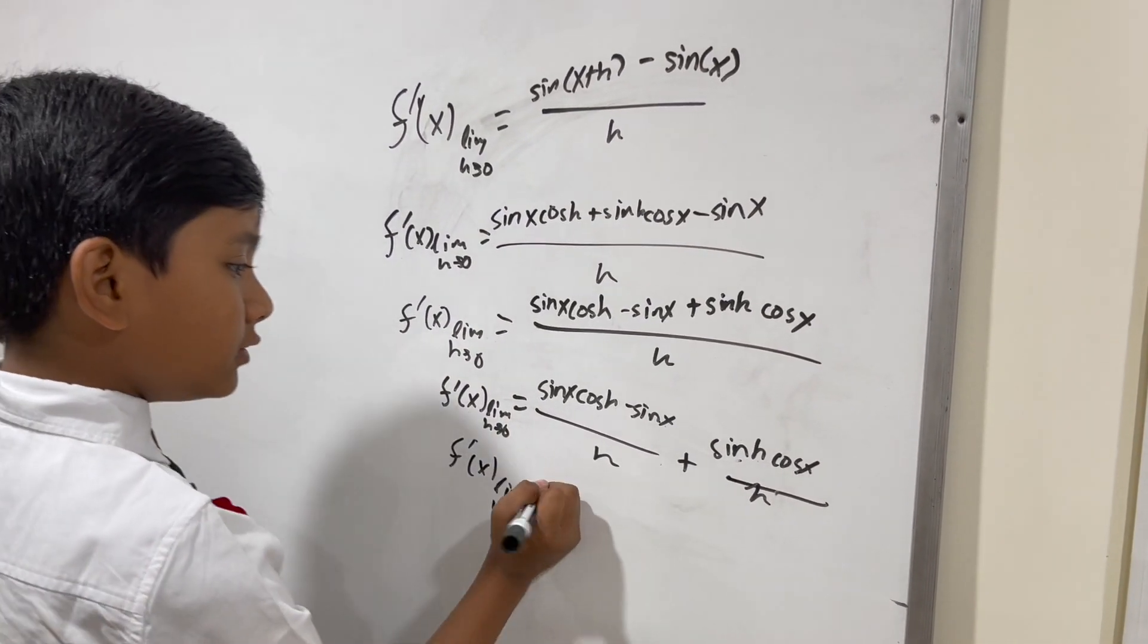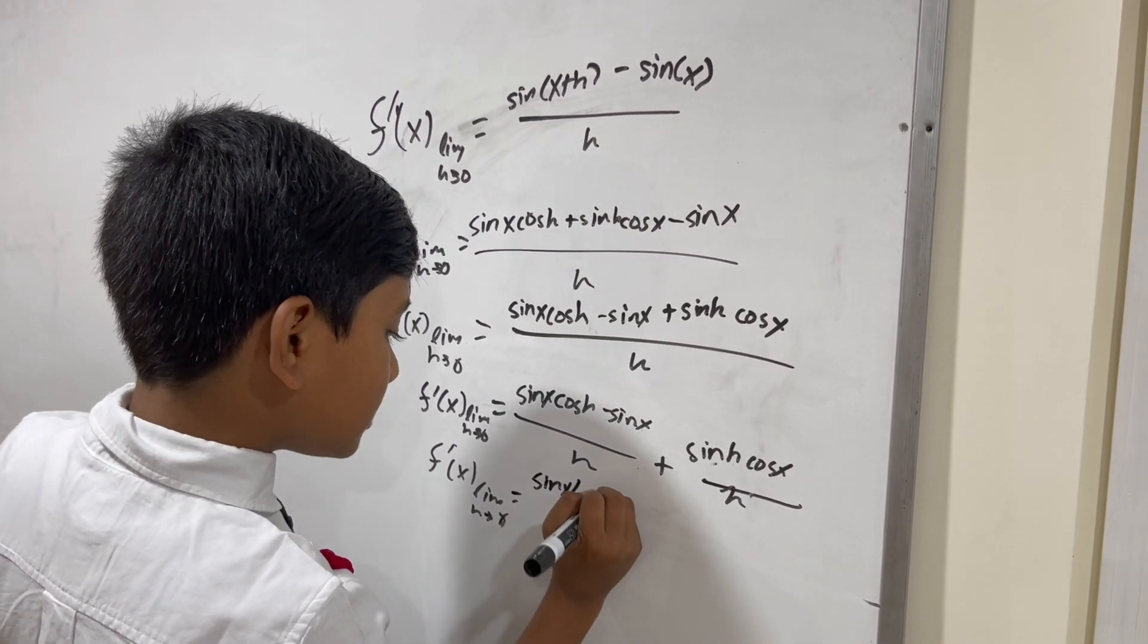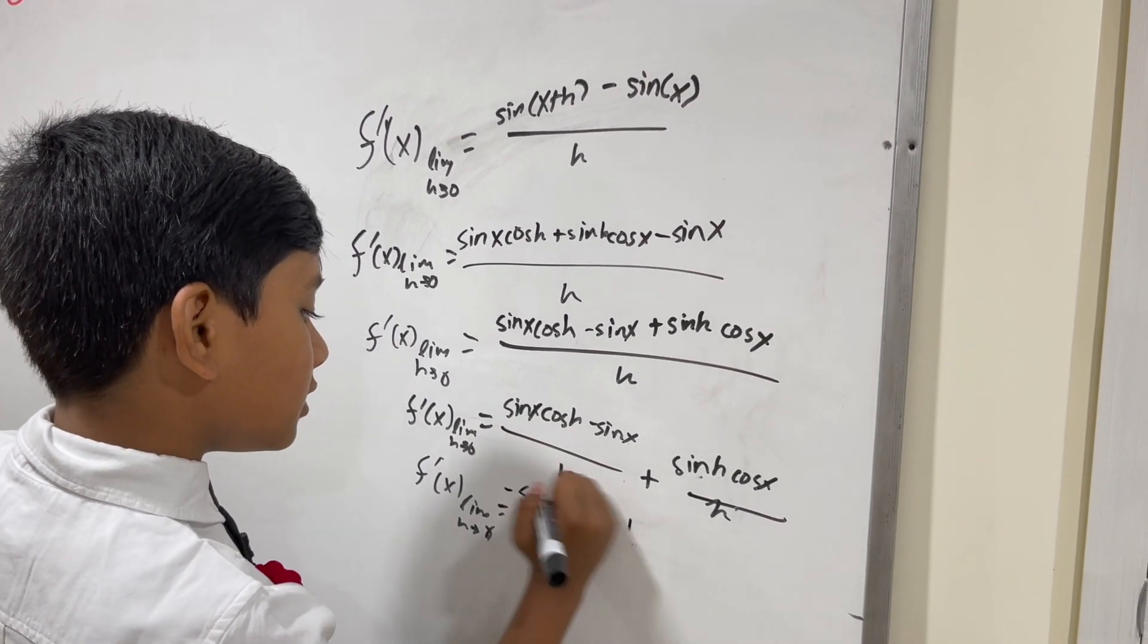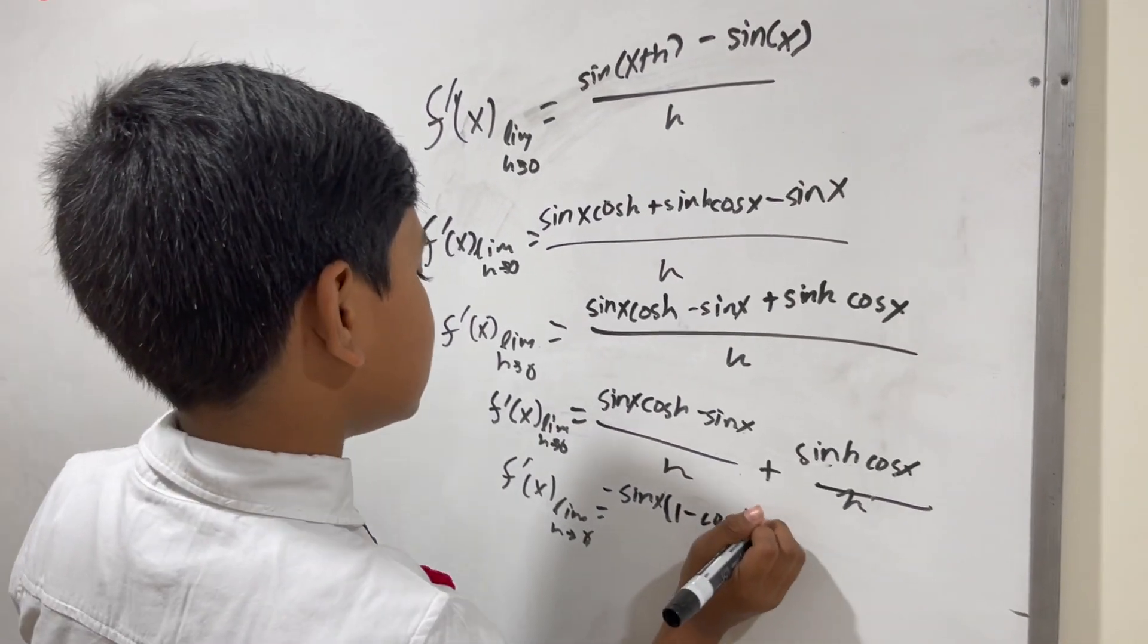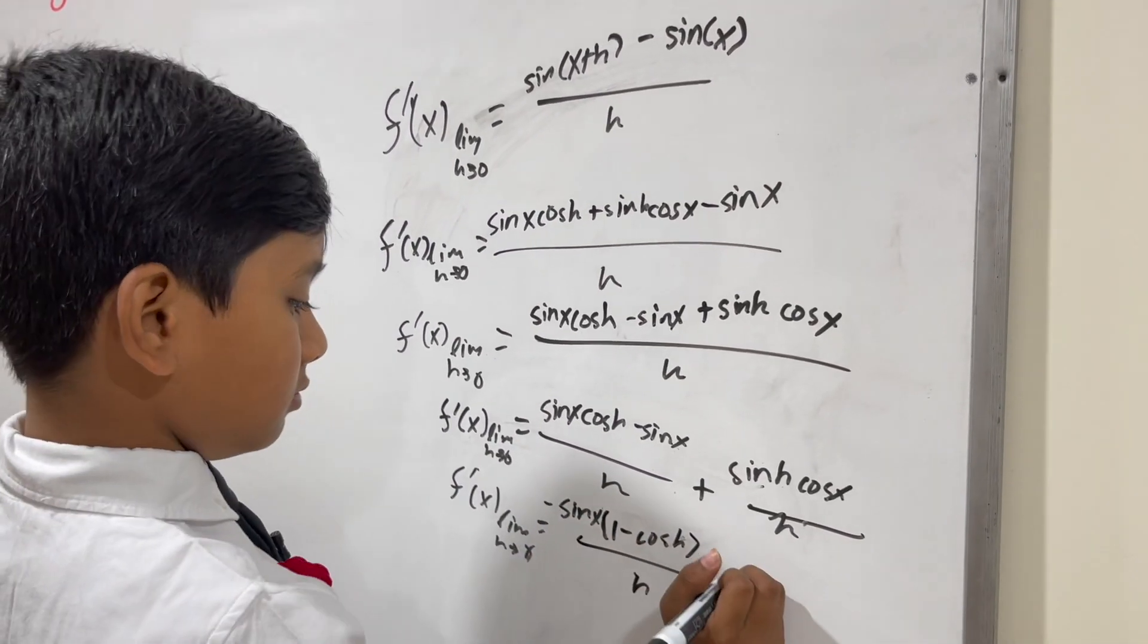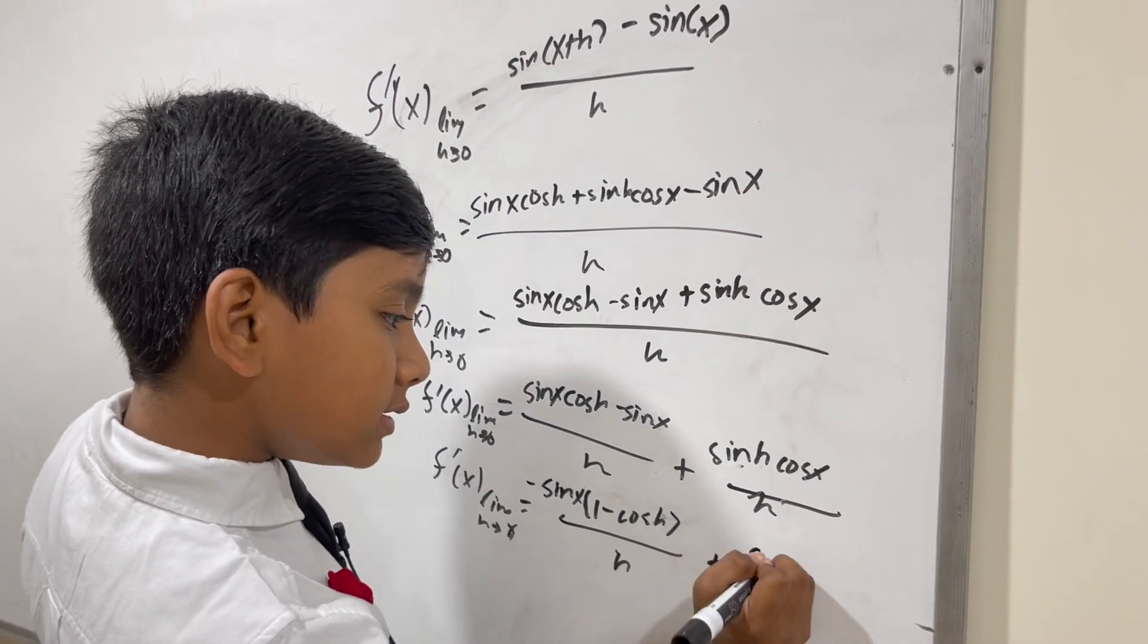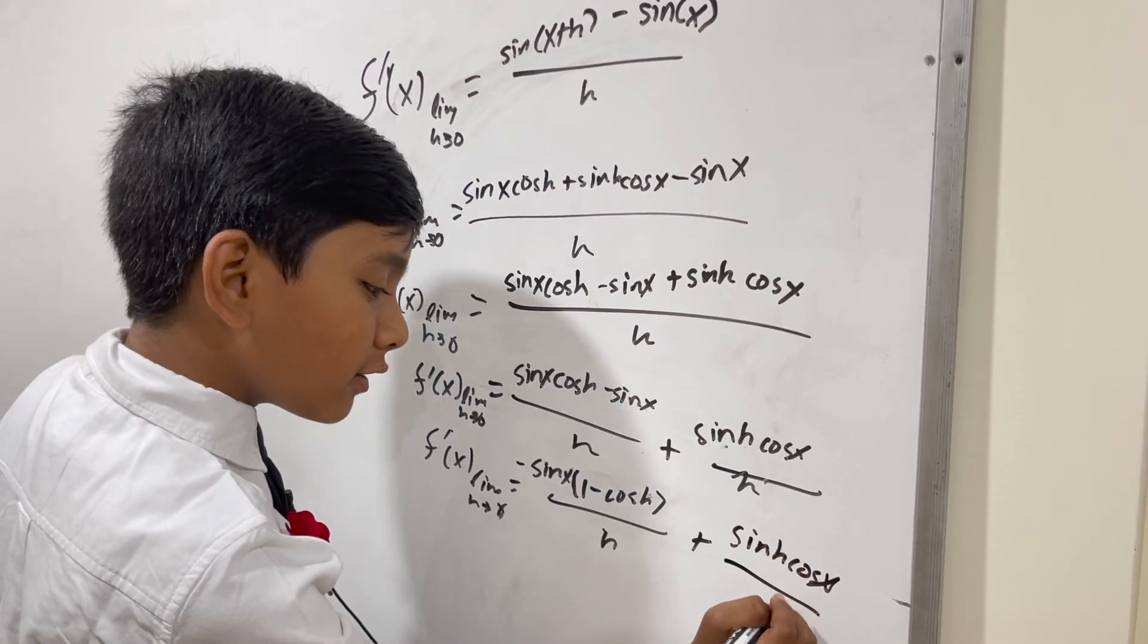This gives you sine of x times cosine h minus 1. I'm going to make it negative sine of x just for the pleasure of having 1 minus cosine h over h, plus sine of h cosine x over h.